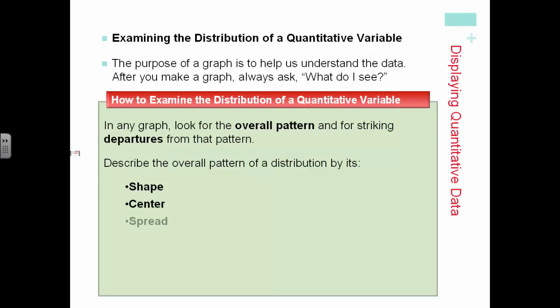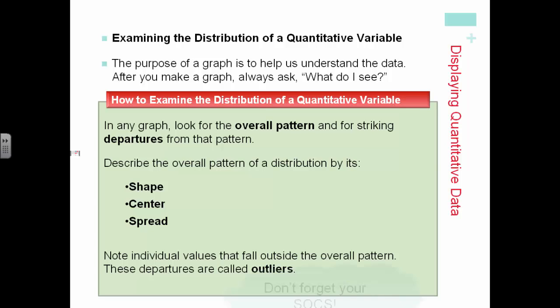We describe an overall pattern of a distribution by its shape, center, spread, and individual values that fall outside the pattern are called outliers. The way to remember this is our SOCS.